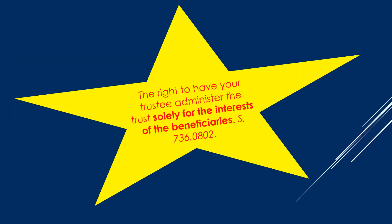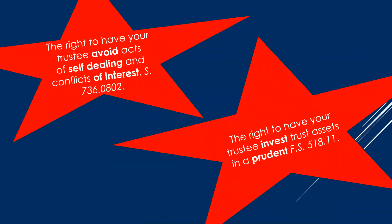Trust beneficiaries have the right to have your trustee administer the trust solely for the interests of the beneficiaries. Beneficiaries have a right to have your trustee avoid acts of self-dealing and conflicts of interest — 736.0802, super important. Conflicts need to be avoided at all costs. If there's real estate to be sold and your spouse is a broker, don't give them that listing. If you as trustee want to buy trust real property yourself, that's an act of self-dealing — don't do it. Resign and deal with it at arm's length.